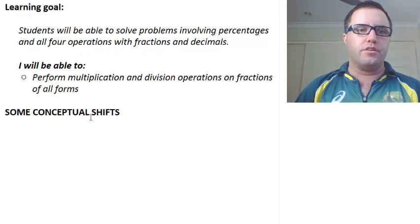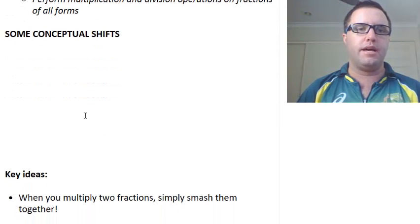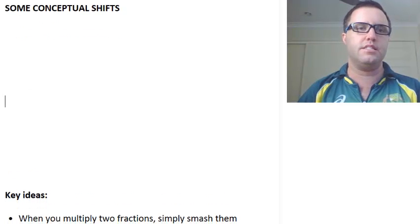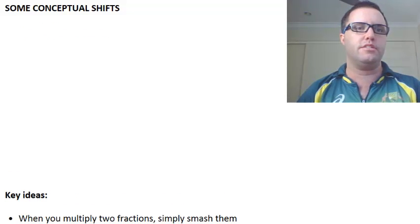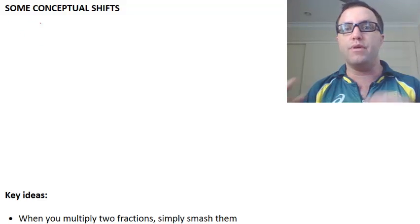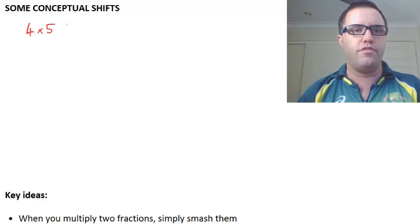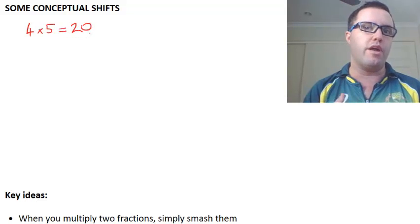Right, so firstly, before we get into it, I want to talk about some conceptual shifts that I'd like you to consider. In the past, multiplication would have given you a bigger number. For example, if we had 4 times 5, that's going to be 20, and obviously 20 is larger than both 4 and 5.